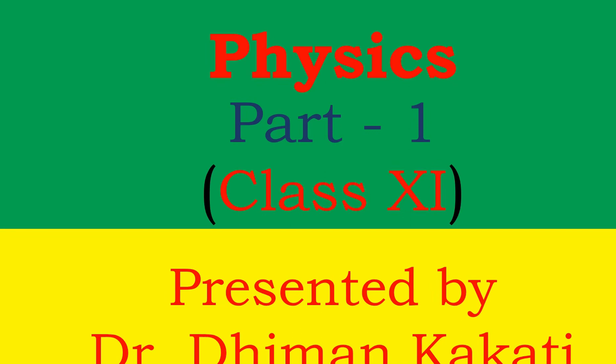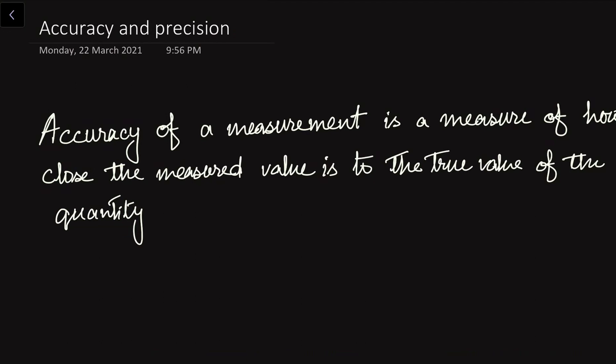Hello everyone. This is Dr. Diman and I welcome you all to this lecture series in NCERT Physics of Class 11. We were discussing about the second chapter on Units and Measurement. In this video, we will learn about Accuracy and Precision — two terms that are commonly asked from an examination point of view. Let us see their definitions.